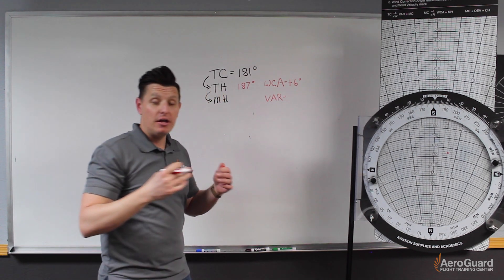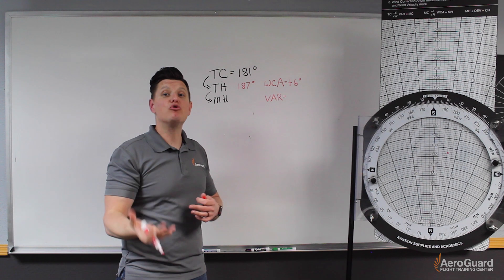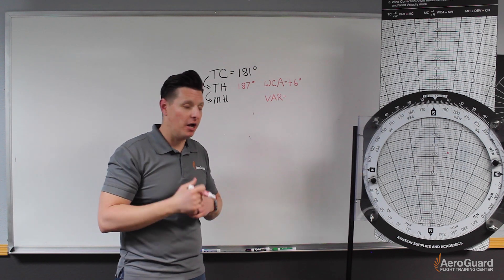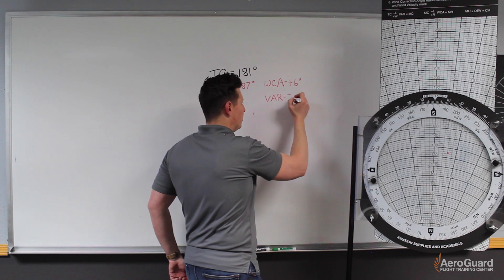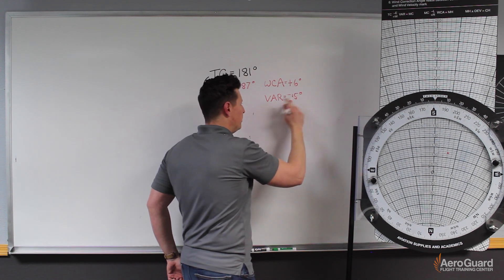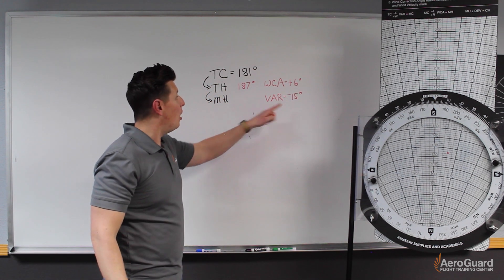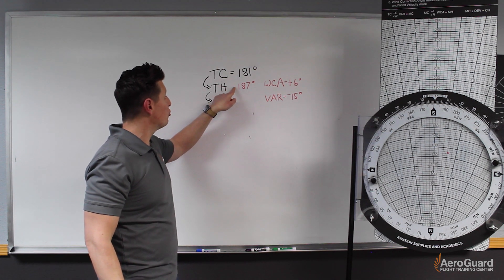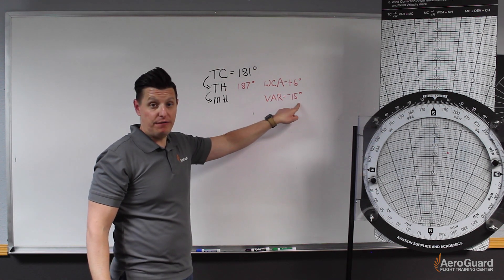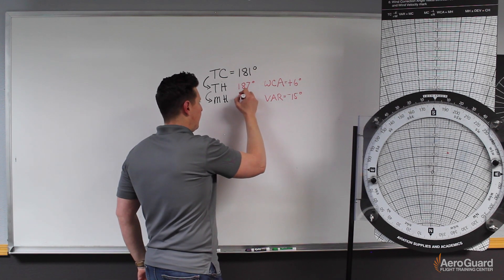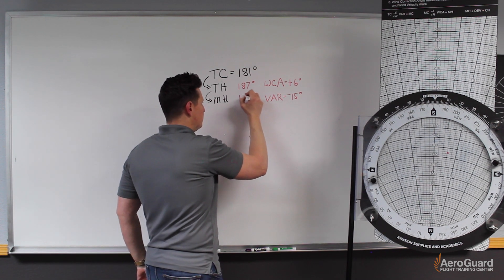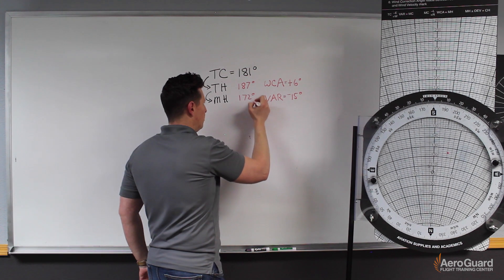We have variation, and if we have east variation, we are going to subtract. I use the mnemonic east is least. So in this case, that means we are going to subtract the 15 degrees of variation. So now what we need to do is take our true heading minus the 15 degrees of variation, and we will get our result: a magnetic heading of 172 degrees.